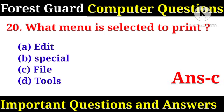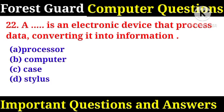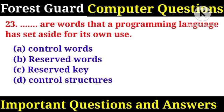Which menu is selected to print? Right answer: C, File. The name used when accessing a document is called a file name. Right answer: A, file name. An electronic device that processes data converting it into information is a computer. Right answer: B. Words that a programming language has set aside for its own use are reserved words.